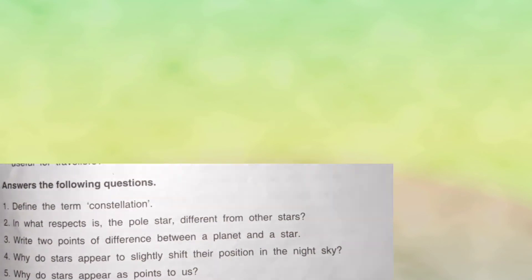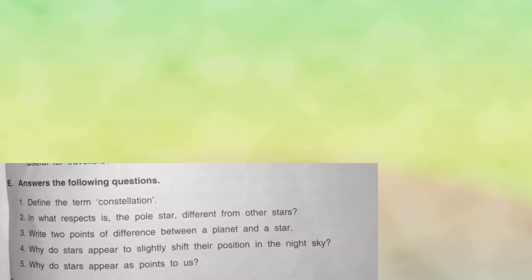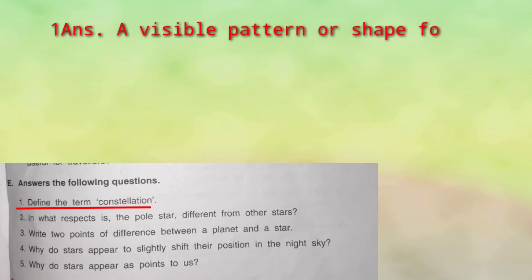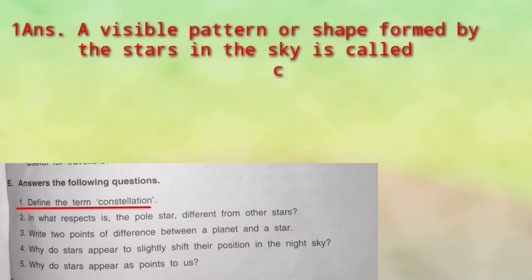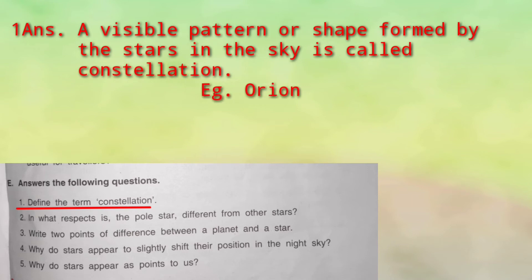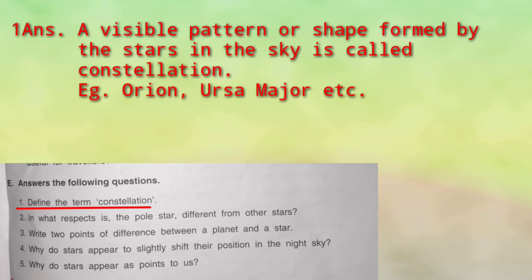Now we come to the long question answers. Define the term constellation. Constellation kya hain? A visible pattern or shape formed by stars in the sky is known as a constellation — visible pattern ya shape jo hum recognize kar sakein, sky mein stars se bana ho, use constellation kehte hain.